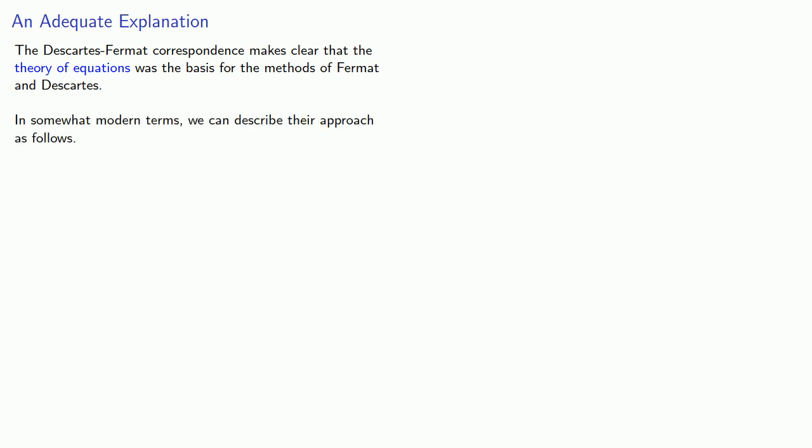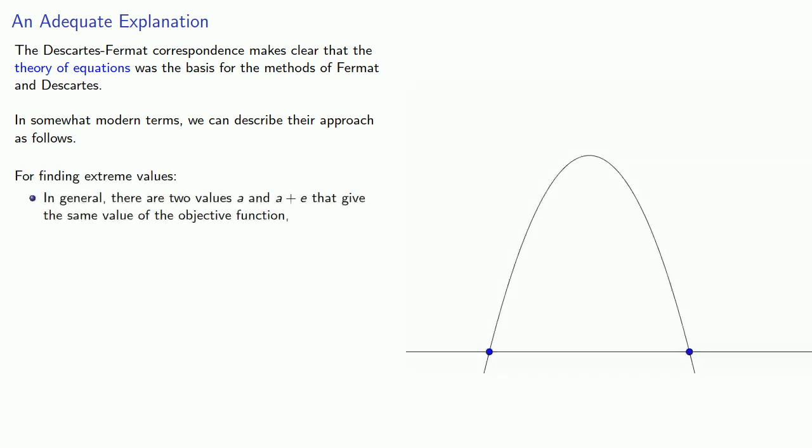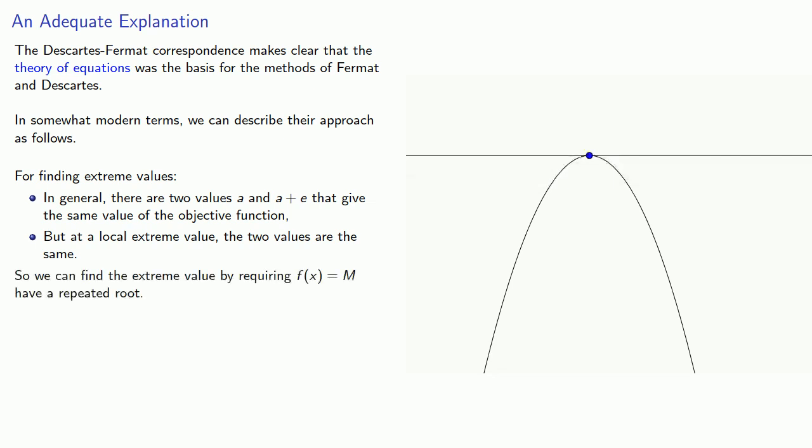In somewhat modern terms, we can describe their approach as follows. For finding extreme values, in general, there are two values, a and a plus e, that give the same value of the objective function. But at a local extreme value, stop me if this sounds familiar, the two values are the same. And so what that says is that we can find the extreme value by requiring our objective function equal to some value, f of x equals m and otherwise, have a repeated root.